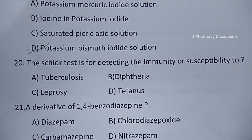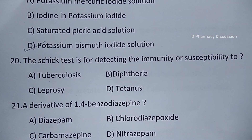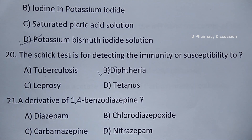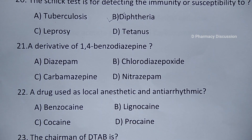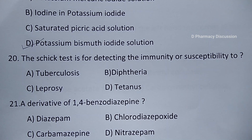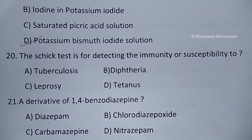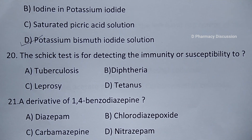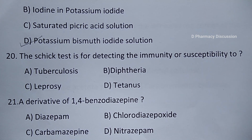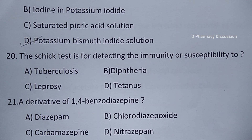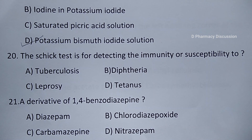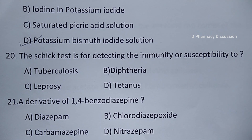Question number 20: the Schick test is for detecting the immunity or susceptibility to — option A. Tuberculosis, B. Diphtheria, C. Leprosy, and option D. Tetanus. The correct answer is option B, Diphtheria. For tuberculosis, diagnostic tests used are the Dot test, TST (tuberculin skin test), Mantoux test, and tine test. For leprosy, histamine test and lepromin test are performed.